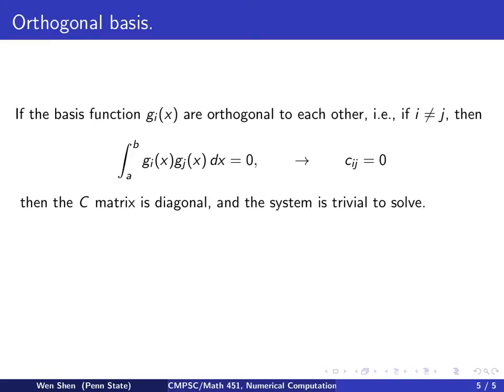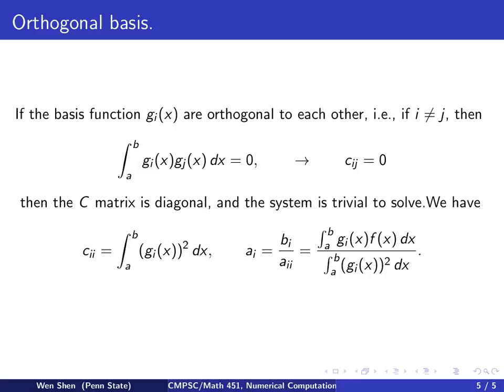One can just solve it straightforward. So what will be the diagonal element here? The c_ii will be g_i times g_i, so it's g_i square, so you know that will not be zero, because basis functions are not zero. And then the a_i will simply equal to the b_i over a_ii. So plug in the expression. The b_i is the g_i times f, integrated, and the a_ii is the g_i square, integrated.